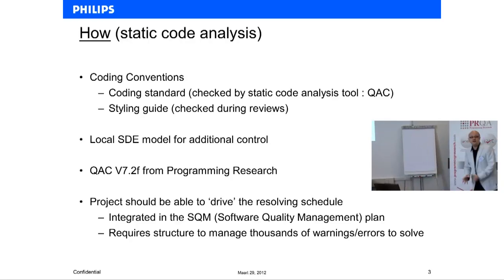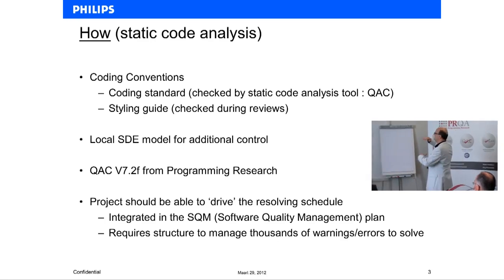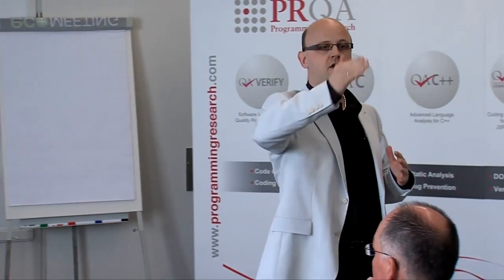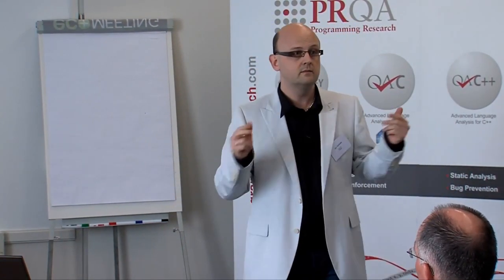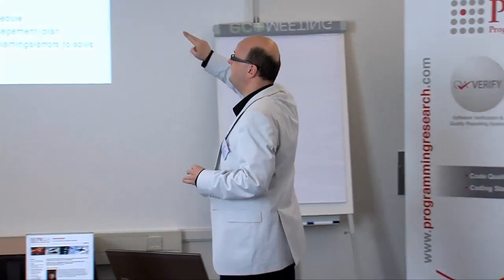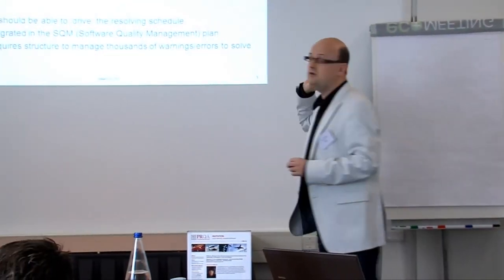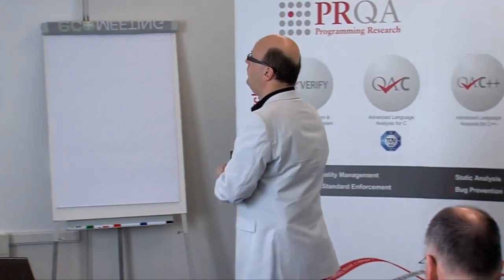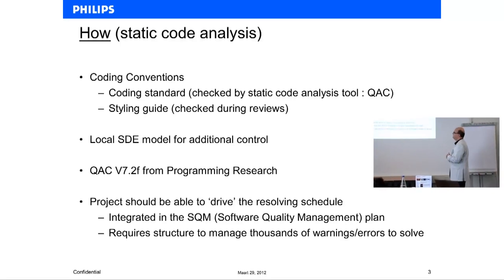We have coding conventions. We call them conventions because we explicitly split the coding standard from the styling guide. When talking to certain people, they talk about tabs, spaces, and naming functions. We have a coding standard, and these things can be checked using a static code analysis tool. We also have a styling guide covering spaces and so on. We have a local software development model for additional control.